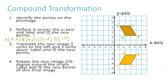Now I'm moving on to step three. Step three says translate the new image five units to the left and three units down, then label and identify the new points. I'm going to start with my A prime point. I go five units to the left and three units down — this is my next A.